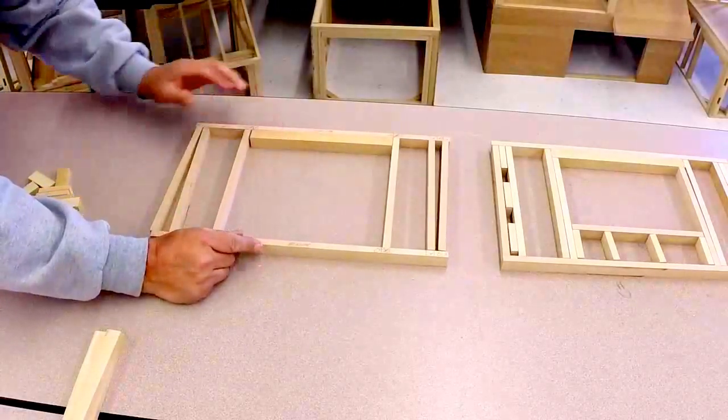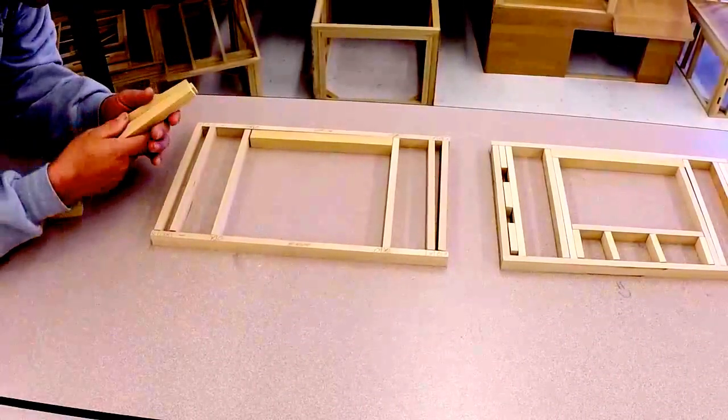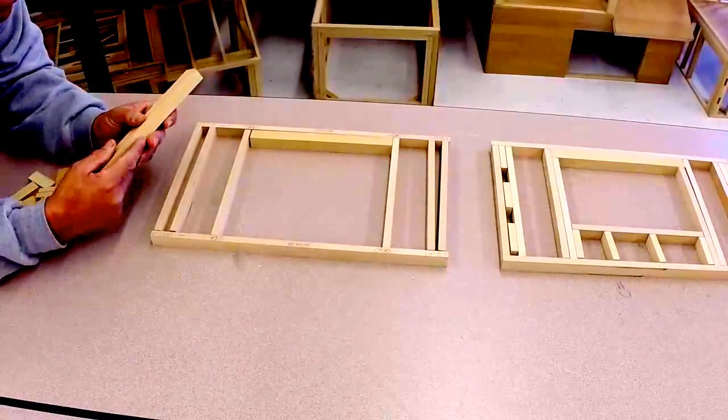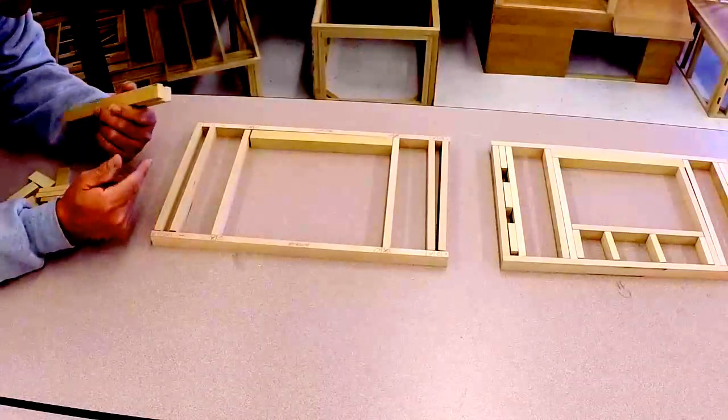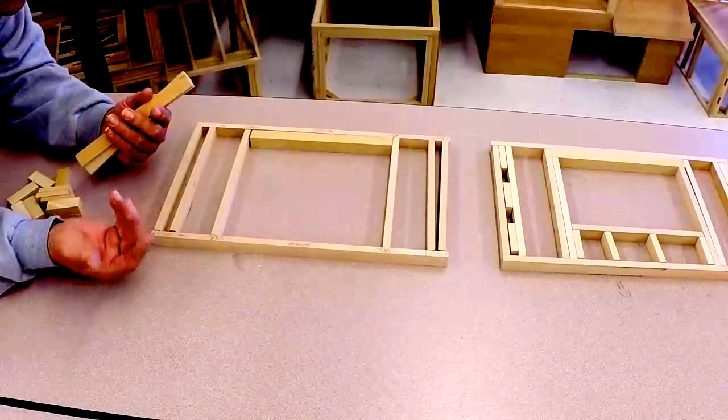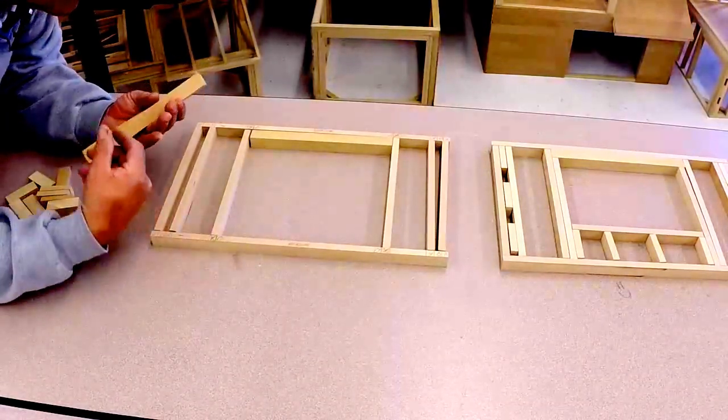Did you notice it has the X's and the O's? The reason for that, in real framing you mark it, people mark it different ways, but most of the time you'll see X's and O's. Meaning the X will go the board, which is your stud, king stud, will go from the top to the bottom, and your O's meaning that it does not go all the way up.